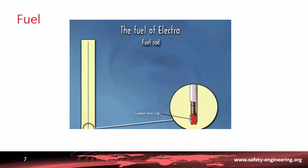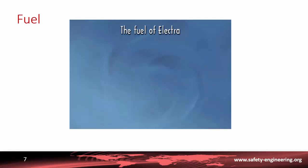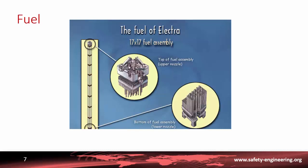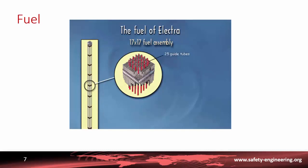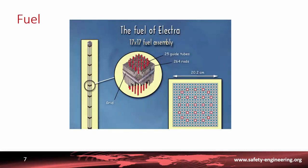End caps are welded to the ends of the rods. At the top there is an empty space, referred to as a plenum, that contains a spring to receive the gases released by the fuel while it is in the reactor. These rods are combined in sets to form fuel assemblies. The top of the fuel assembly, or upper nozzle, is designed to facilitate handling. The bottom, or lower nozzle, ensures accurate positioning on the support plate in the reactor vessel. The fuel assembly is rigidified by 25 guide tubes linking the two end fittings. Grids attached to the guide tubes receive the 264 fuel rods. These grids are square, each side approximately 20 centimeters long with 17 rod positions. They maintain the rods at regular spacing, prevent them from vibrating, and facilitate water flow.